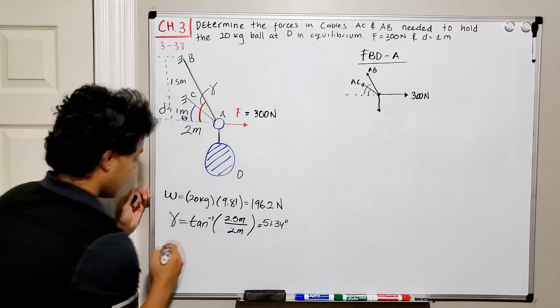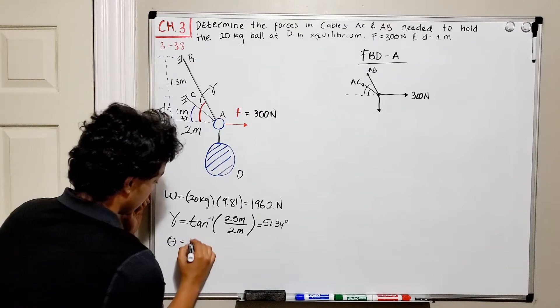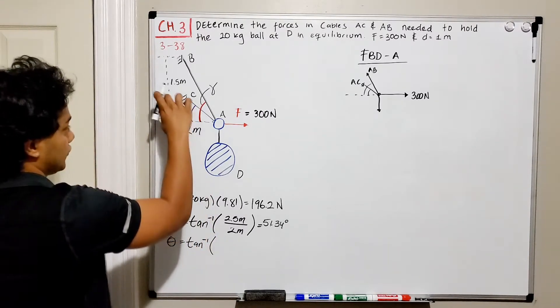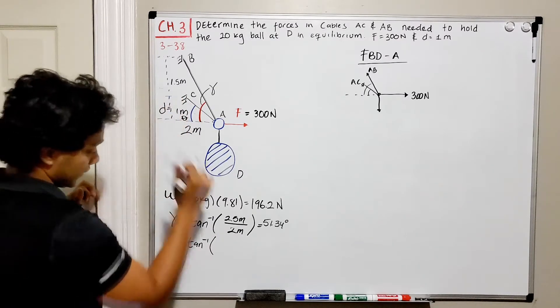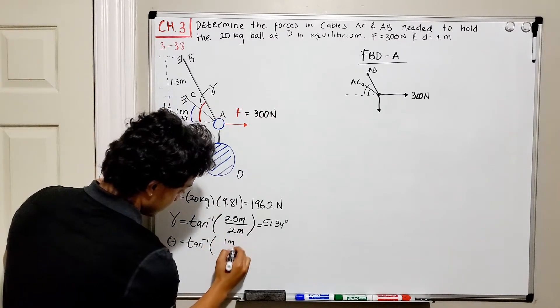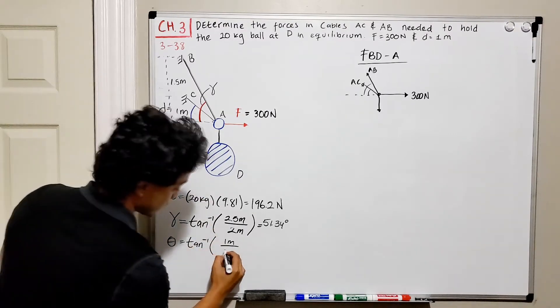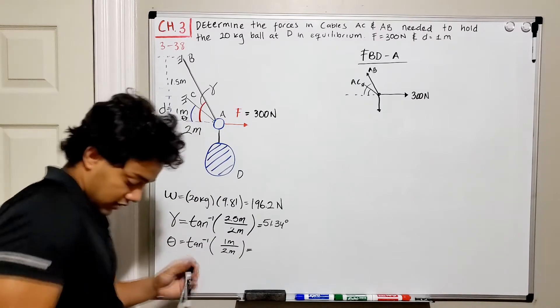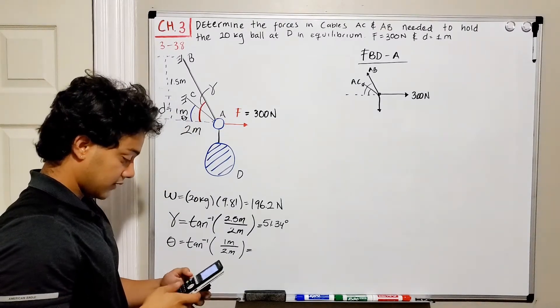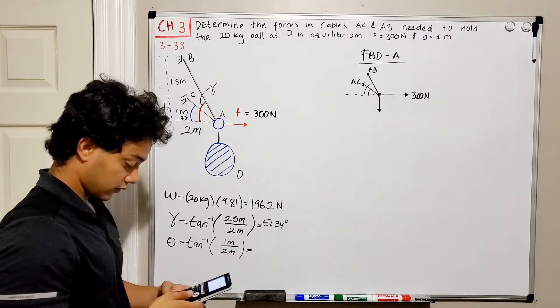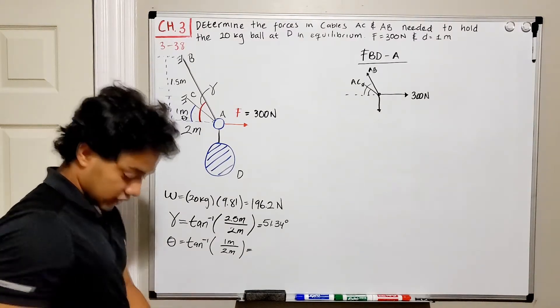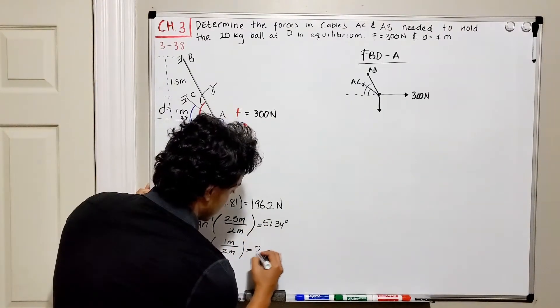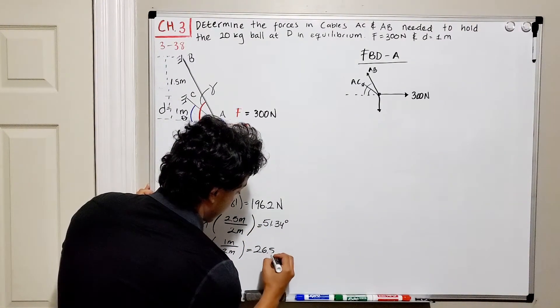And we know that gamma is equal to the inverse tangent of the opposite, which is only 1 meter, divided by the adjacent, which is equal to 2 meters. So inverse tangent of 1 divided by 2 is equal to 26.56. So 26.56 degrees.